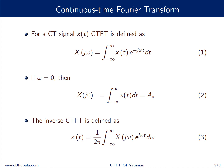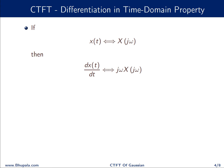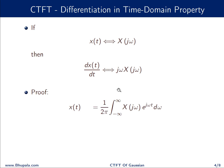Before we proceed, let us prove the differentiation in time domain property. For any signal x(t) with Fourier transform X(jω), this property states that if you differentiate the signal in the time domain, in the Fourier domain it equals multiplication of X(jω) with jω. Let us prove this, which is very simple.